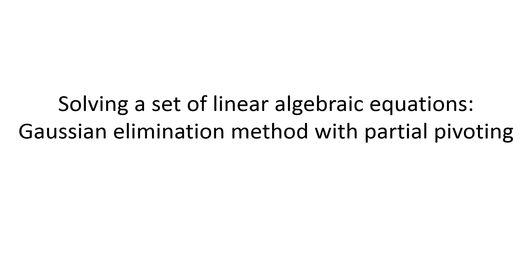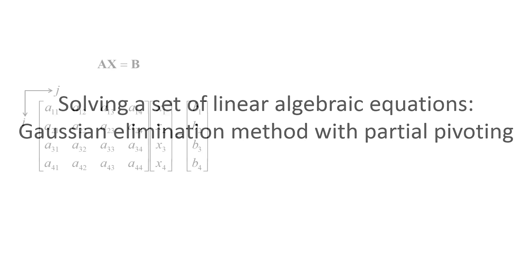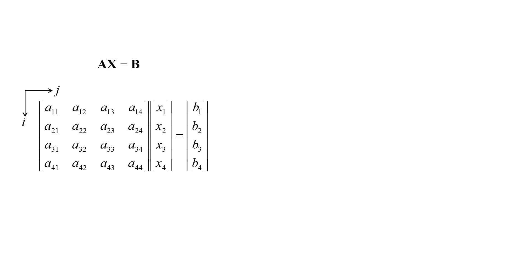In this lesson, we will discuss how to solve a set of linear algebraic equations using the Gaussian elimination method with partial pivoting. Here we have a system of four equations expressed in matrix form as Ax equals b. The A matrix contains 16 known coefficients, the b column vector contains four known constants, and the x column vector contains four unknowns that we wish to determine. We will use i as the row index and j as the column index.